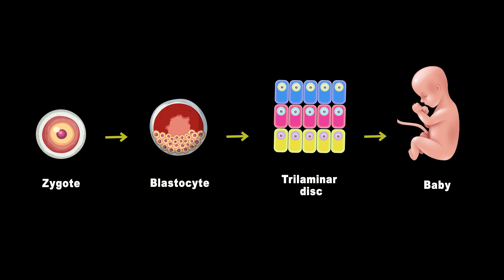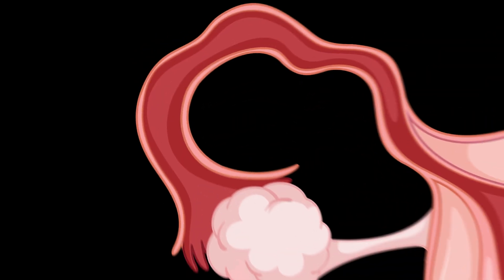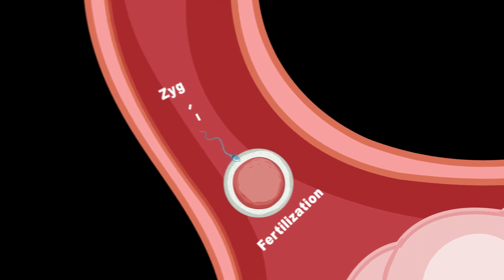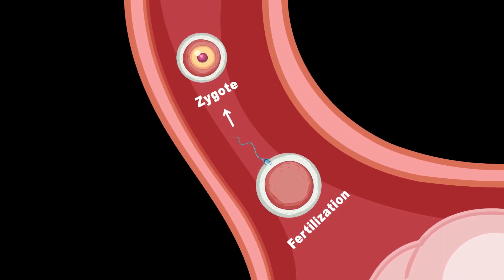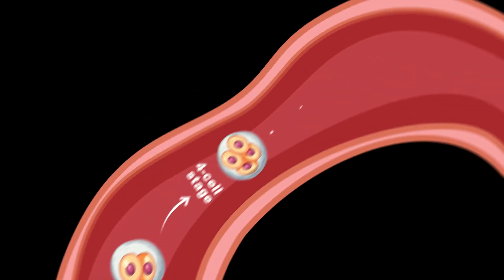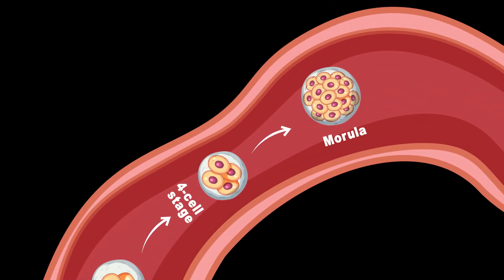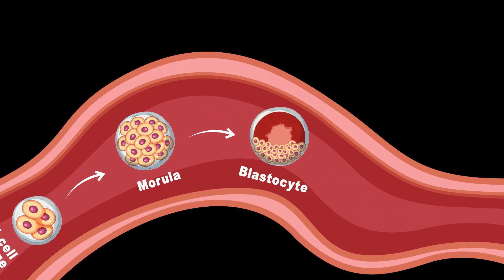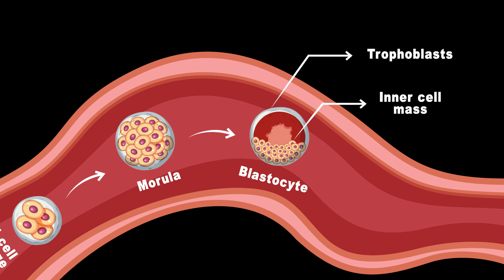Now let's start adding more details and understand how it happens specifically. Fertilization happens when the sperm joins with the egg in the fallopian tube, forming a single cell zygote. The zygote then begins to rapidly and continuously divide, forming a cluster of cells called the morula as it travels through the fallopian tube. As cell division continues, the morula develops into a blastocyst, featuring an inner cell mass surrounded by an outer layer of trophoblast cells.